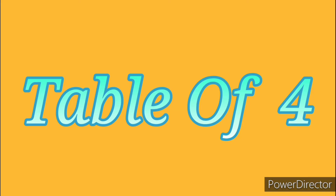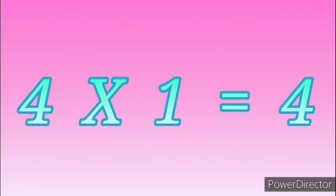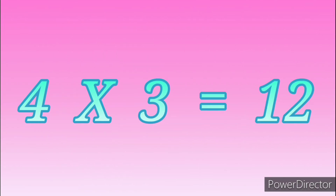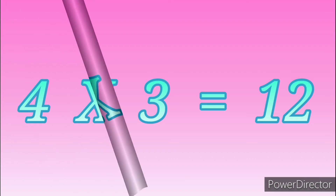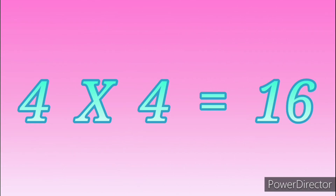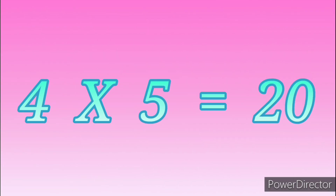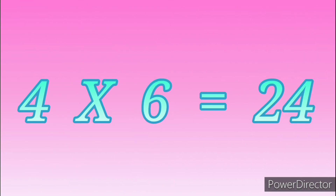Table of Four. 4 ones are 4. 4 twos are 8. 4 threes are 12. 4 fours are 16. 4 fives are 20. 4 sixes are 24.